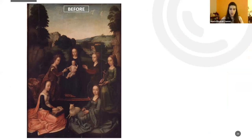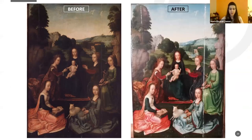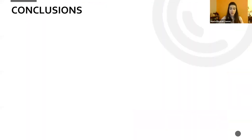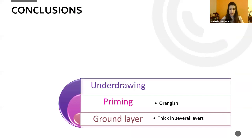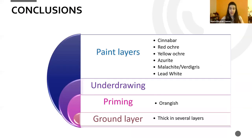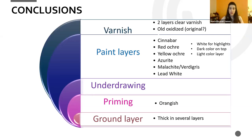Here is the painting before and after the restoration. With the combination of all these techniques, we have reconstructed the painter's palette and technique: the ground layer, the orange priming, the use of underdrawing, and several paint layers. The painter's palette consists of cinnabar and red ochre for red, yellow ochre for yellow, azurite for blue, malachite or verdigris for green, and lead white mixed with all of these. He applied the light color first, then the dark on top, with white for highlights, and also used varnishes.